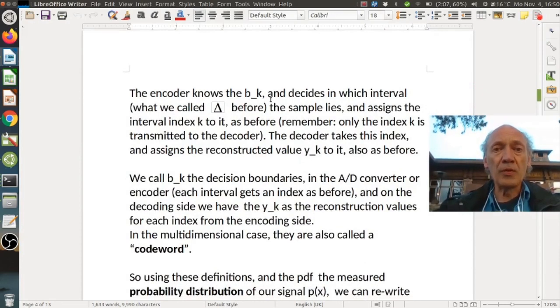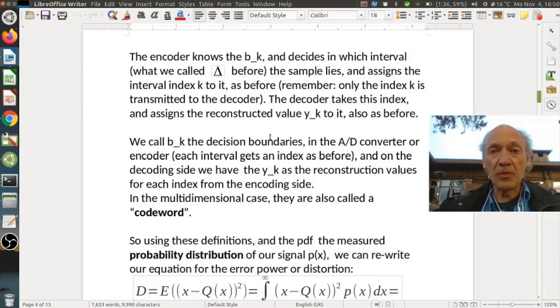So the encoder knows the b_k and decides in which interval, what we call delta before, the sample lies, and assigns the interval index k to it. As before, remember only the index k is transmitted to the decoder. So this is what we transmit as before. And then the decoder takes this index and assigns the reconstructed value y_k to it, also as before.